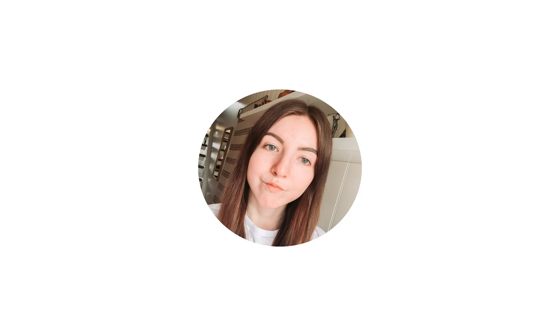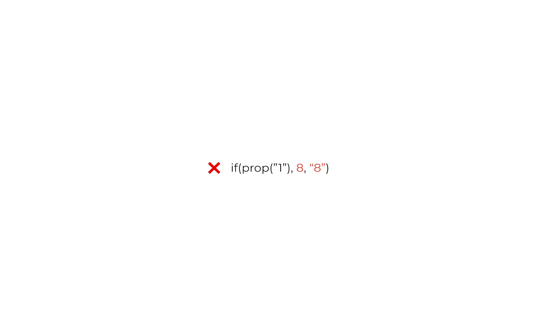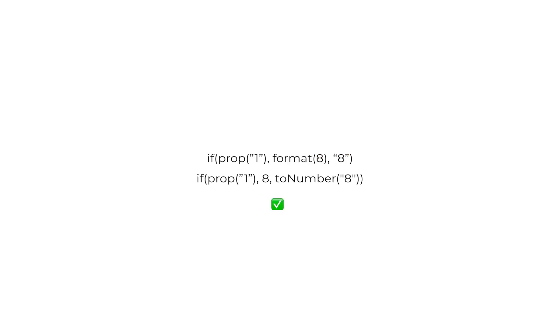I do want to say before we move further that every outcome that could come of your formula has to be of the same type. You can't be displaying a number for one outcome and then text for another — you have to make sure they match. Usually it's an easy fix, but I just wanted to point that out. So make sure your outcomes are all of the same type.